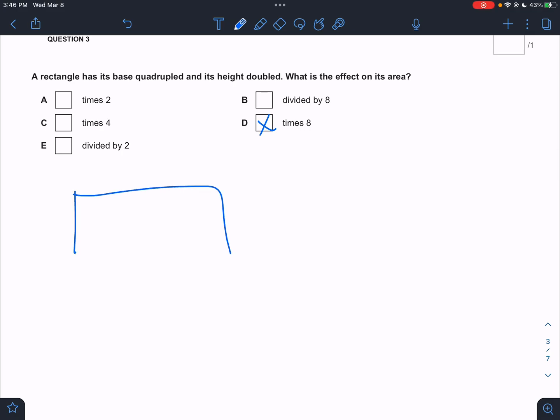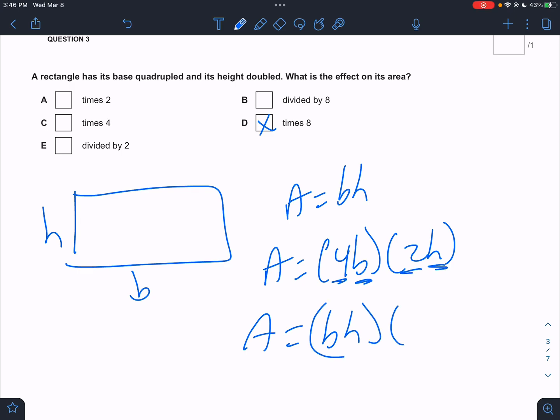A rectangle has its base quadrupled. So the area of a rectangle is base times height. The base is quadrupled. That's four times the base. The height is doubled. Well, we have base times height here still, but don't we have a 4 and a 2 times 8? So overall, it is 8 times bigger. Times 4 times 2 would be times 8 bigger.